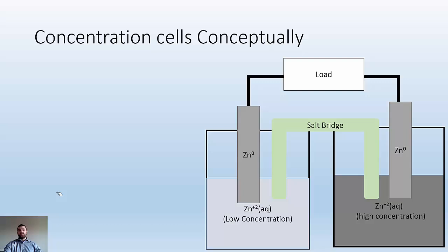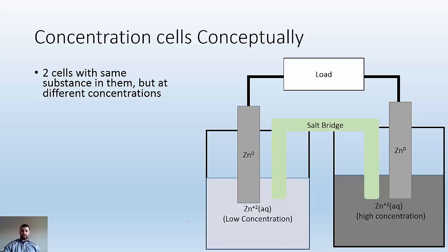A new concept called concentration cells. I'm going to explain them conceptually before we get into math. We start with two cells with the same substance in them, but at different concentrations. I got zinc on the left side and zinc on the right side. The only difference is their concentrations. One side has a low concentration, the other has a high.